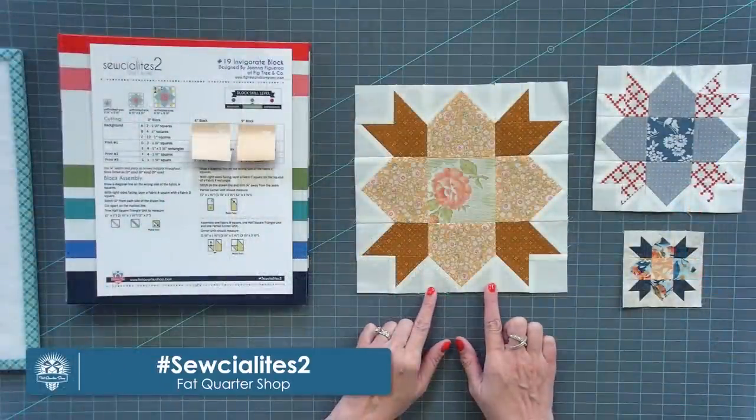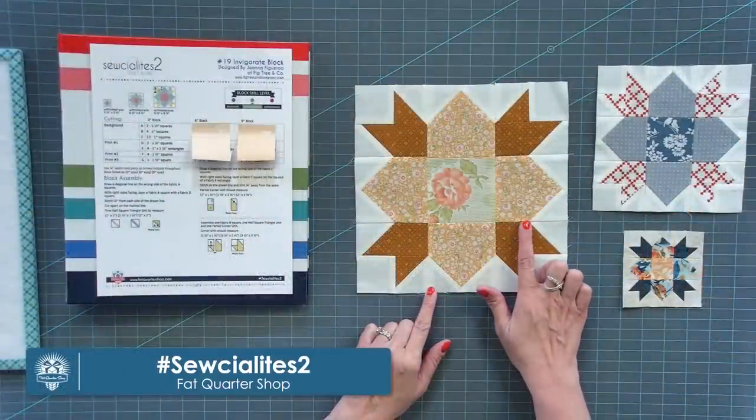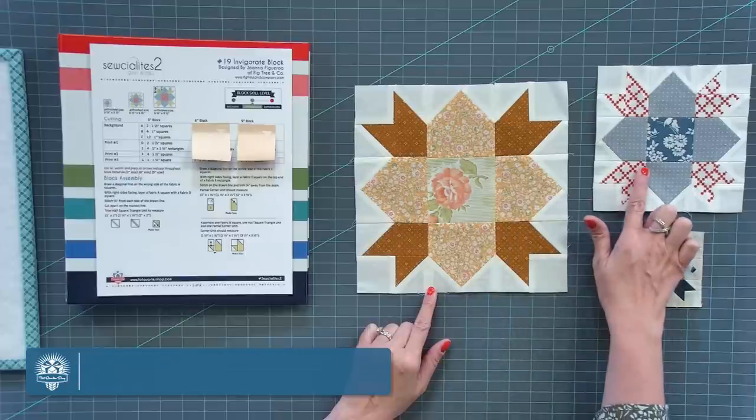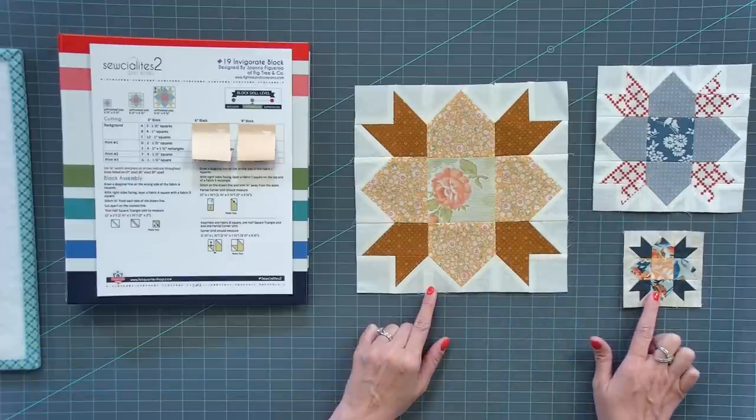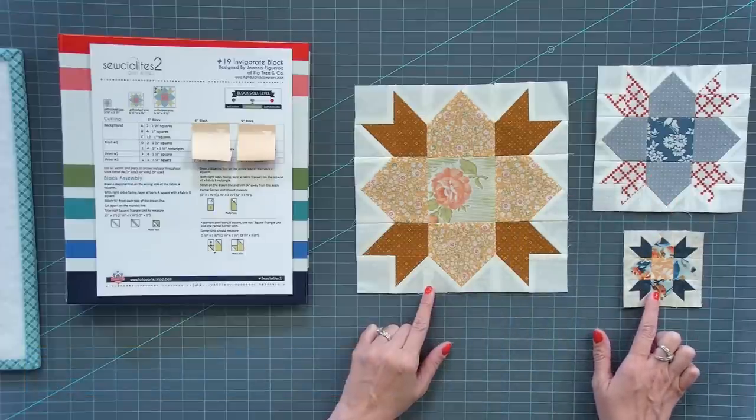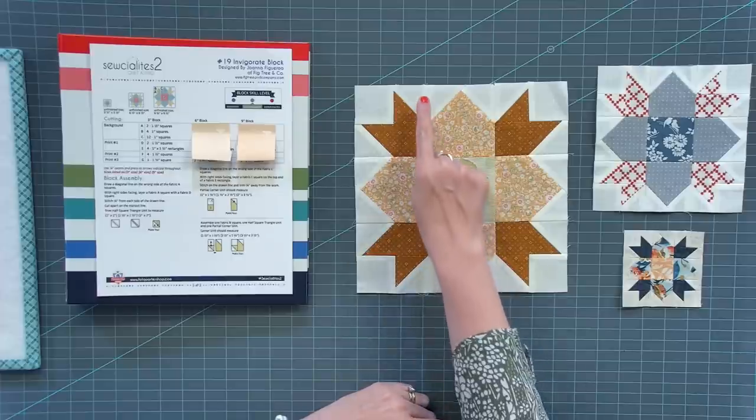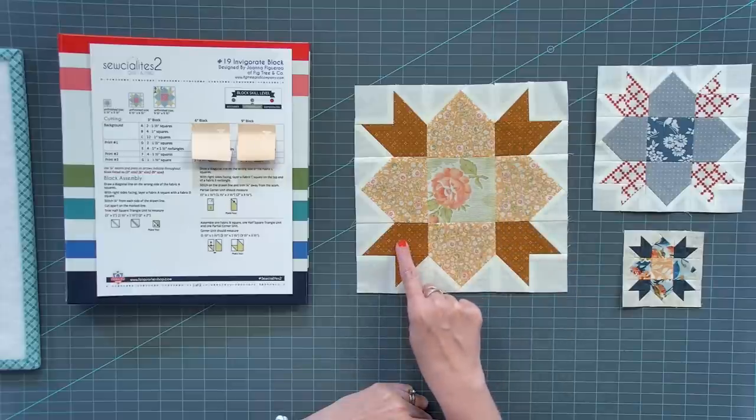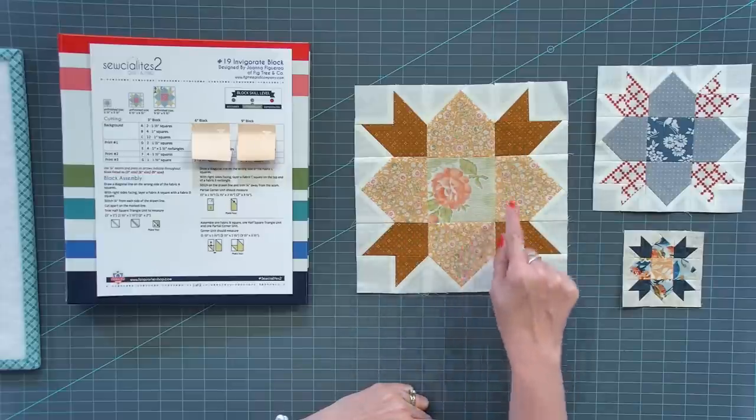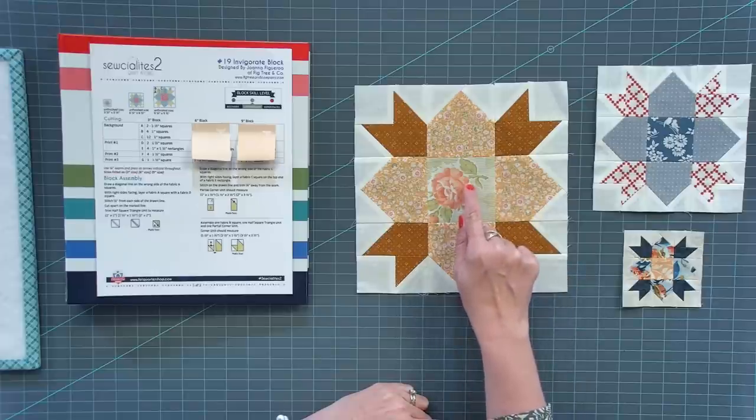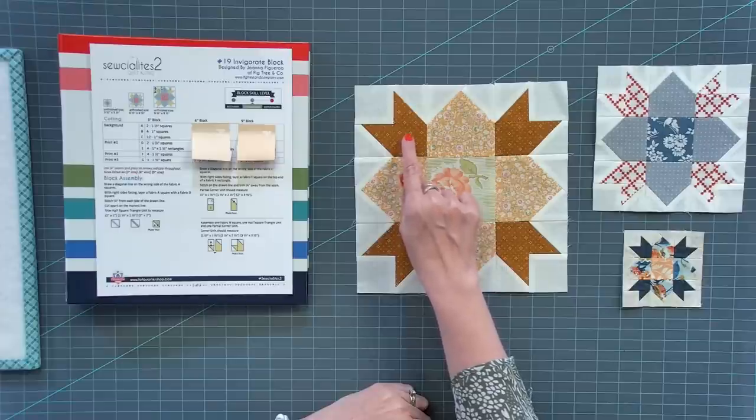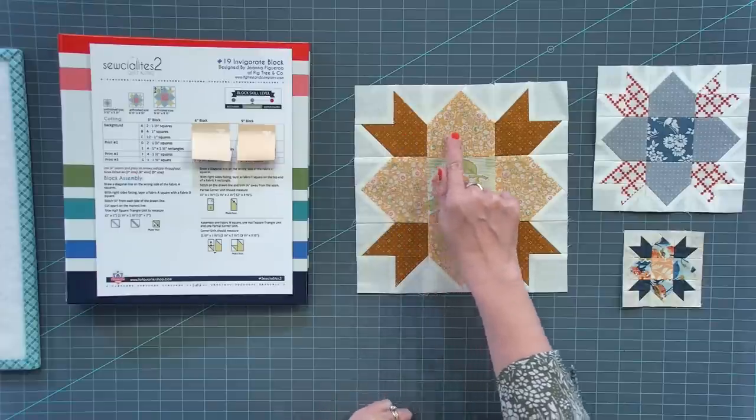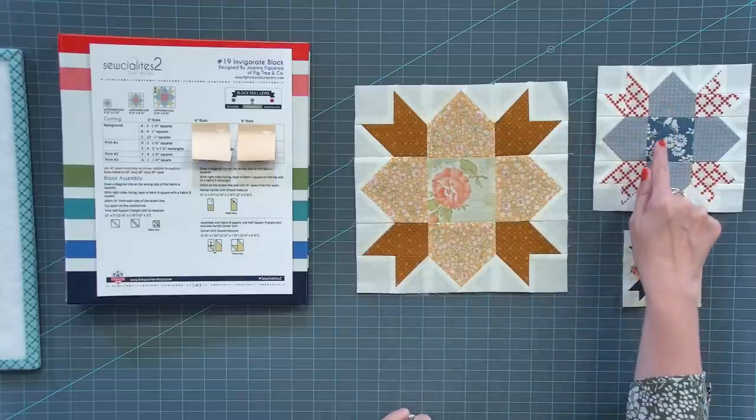This is Socialite's block 19. Here is a nine inch version, six inch version, and three inch version. I would say this is an intermediate block. You're gonna use one background, one fabric for your outer pieces, one fabric for your middle pieces, and then another fabric here. So three fabrics, one background. This block has darker and medium, this one has light and medium and dark.